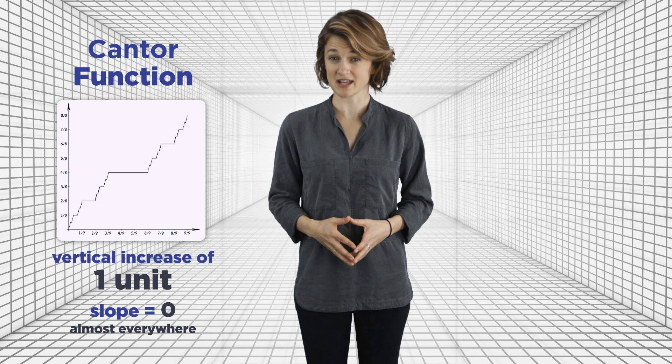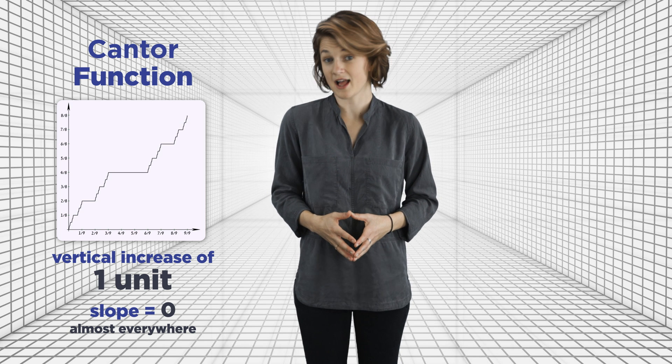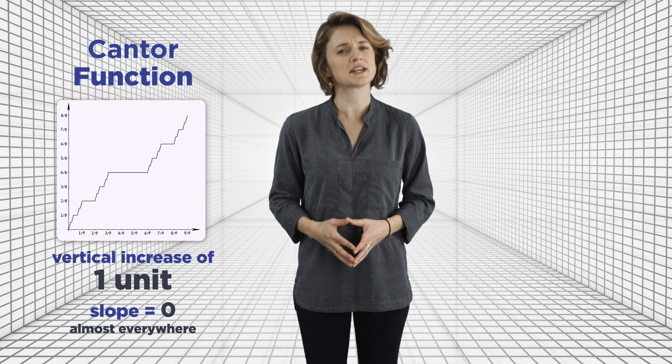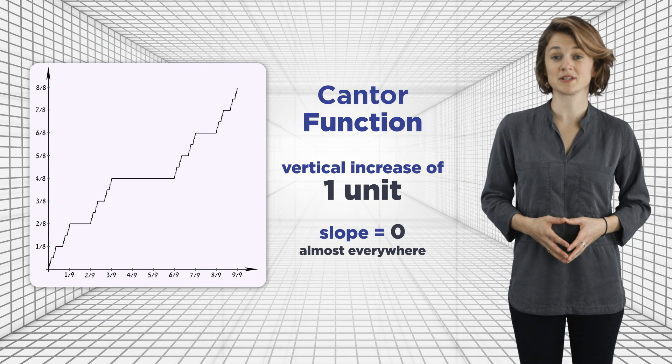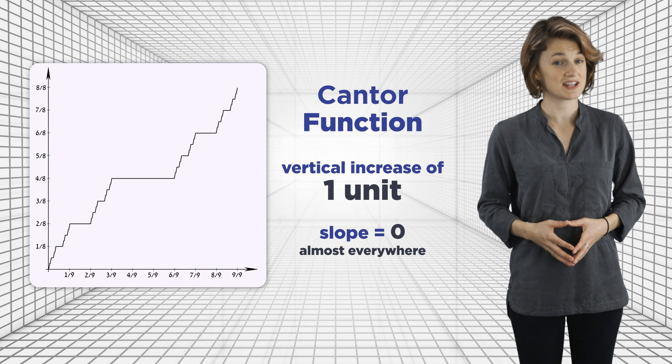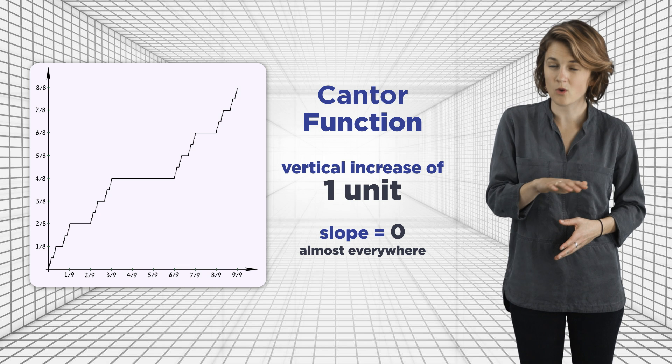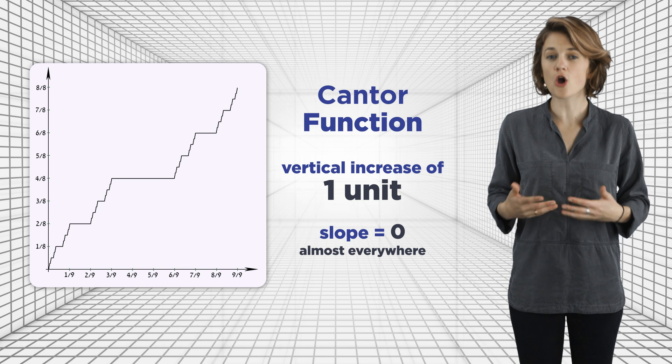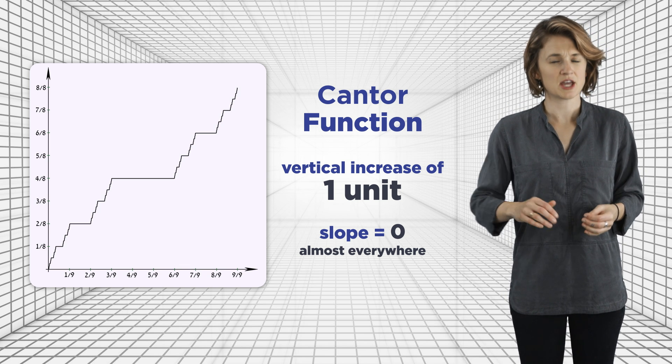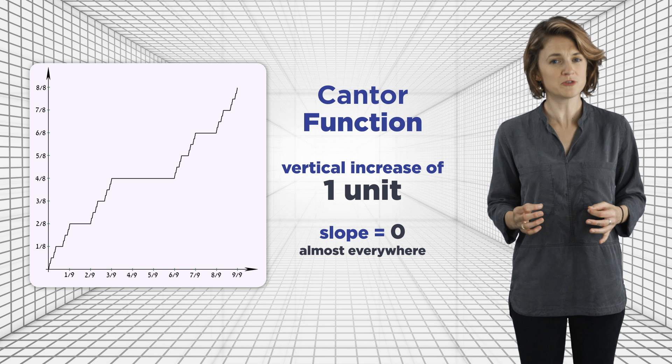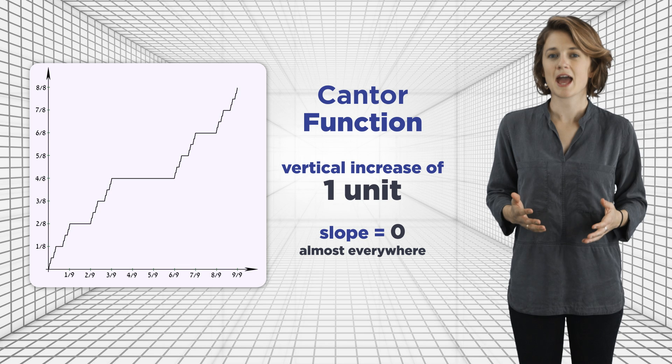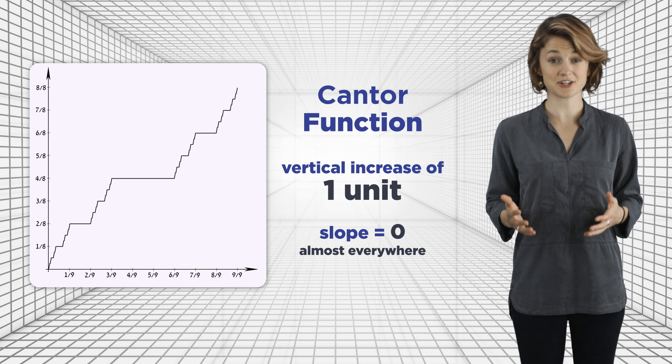The Cantor set has zero length, so all the points that are not in the Cantor set must have length one. So at almost every point, all the ones that are not in the Cantor set, the function is simply moving horizontally. It's making no vertical progress, but still it moves vertically by one unit. So all the vertical movement of the Cantor function happens at the points in the Cantor set.